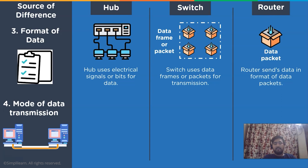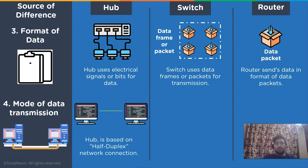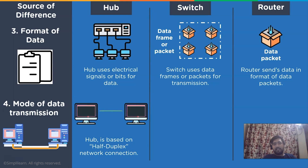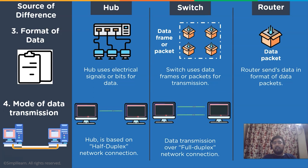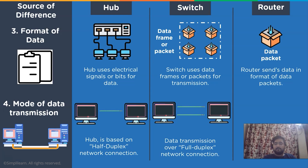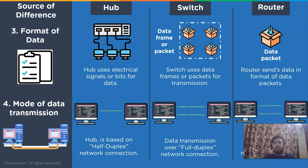The next difference is based on the mode of transmission. A hub is based on a half-duplex network connection, meaning at a certain point in time only a single device can share or receive data from the other endpoint. In the case of a switch, it uses a full-duplex network connection, meaning it can simultaneously receive and send data packets or data frames to any of the connected network devices. Similarly, a router is also based upon the full-duplex network connection.